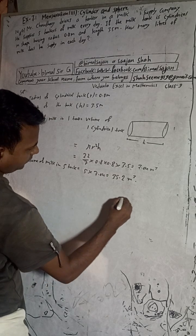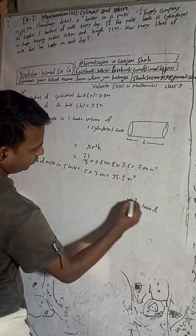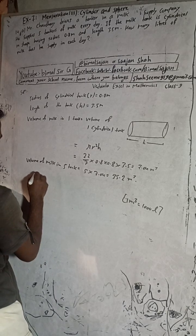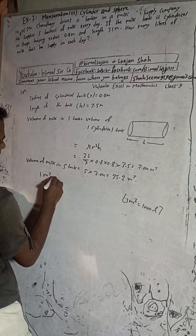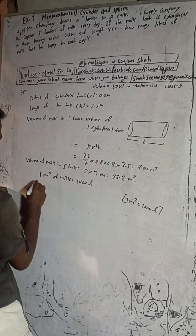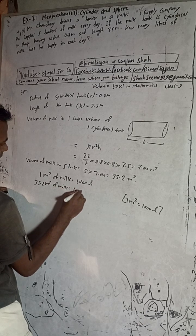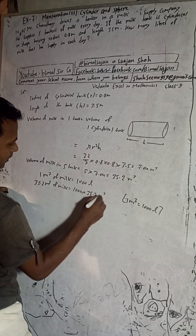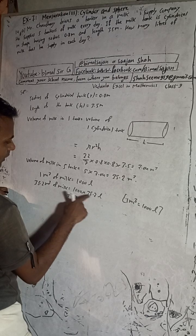Now we know that 1 cubic meter is equal to 1000 liters. So 1 cubic meter of milk equals 1000 liters. Therefore, for 35.2 cubic meters, the volume equals 1000 × 35.2 liters.